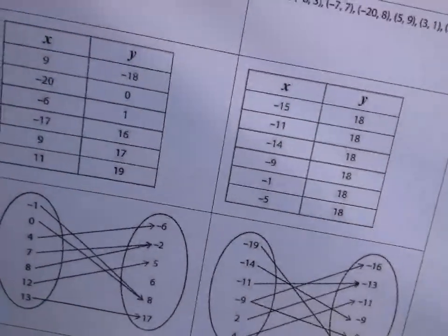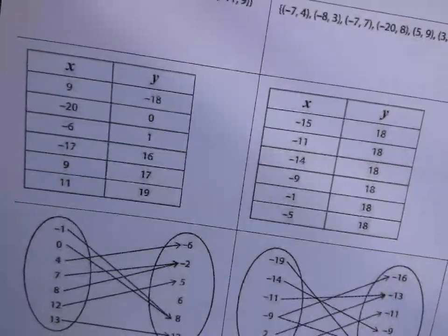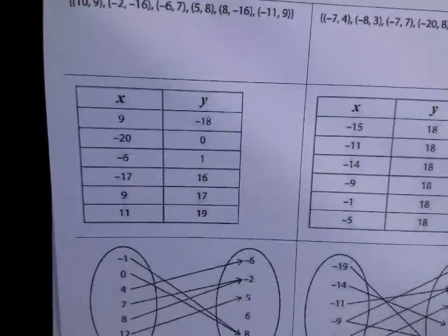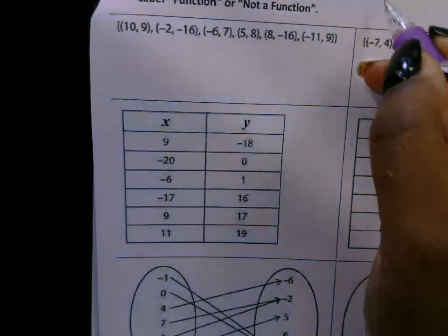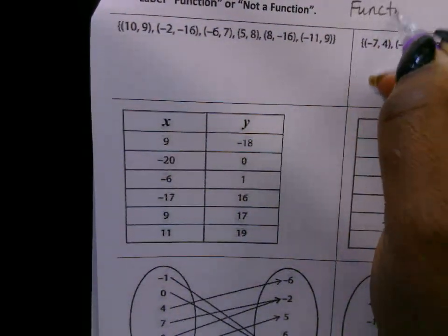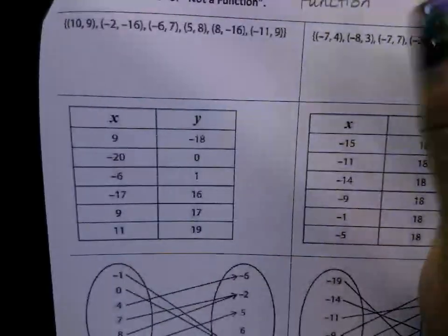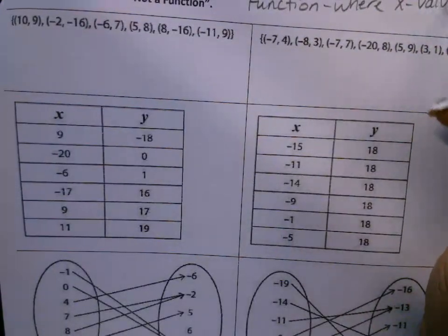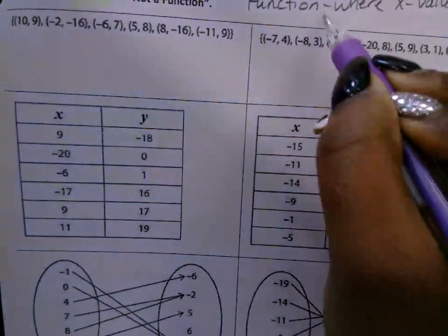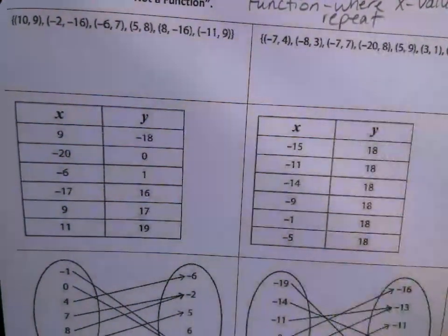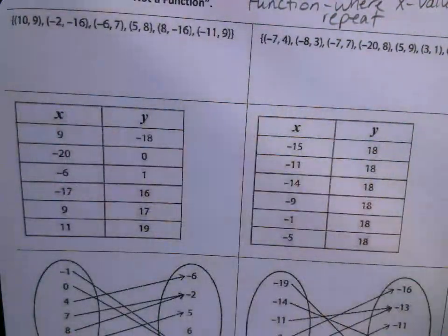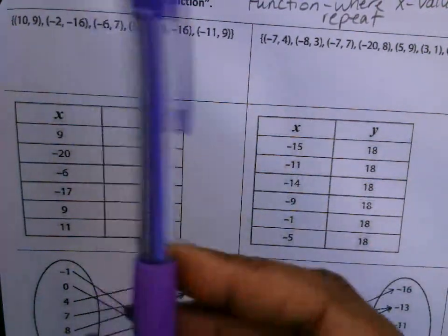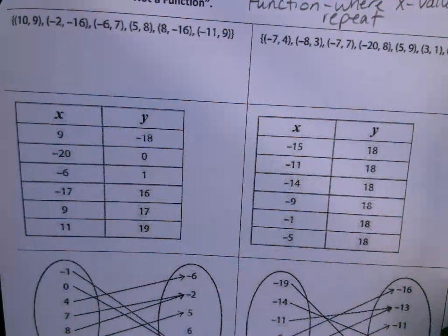The homework for tonight is on functions. This week we're studying our notes on functions and function notation. A function is when your x values do not repeat. If it's a function, the x values — also called domain values — do not repeat; all the x values are different. It passes the vertical line test, which means when you move a vertical line across the graph, that line does not touch the graph more than once at the same time.